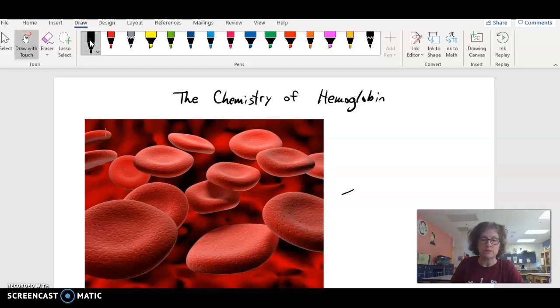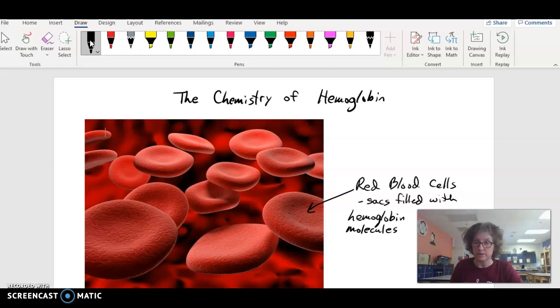First of all, what you might notice is you've got a picture here of some red blood cells. Red blood cells are basically not much more than sacs filled with millions of molecules of hemoglobin. That's what they are, filled with hemoglobin and really not much else. Hemoglobin molecules, remember hemoglobin is molecules, and red blood cells are cells that are filled with these chemicals, with these hemoglobin protein molecules.